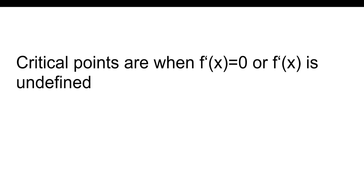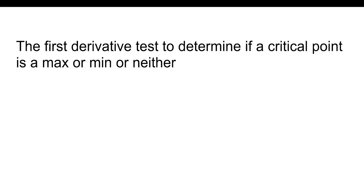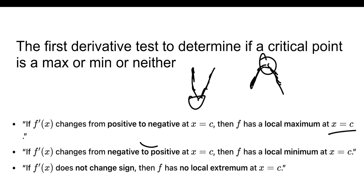Critical points are when f'(x) equals 0 or f'(x) is undefined, and these are candidates for local extrema. The first derivative test determines if a critical point is a maximum, minimum, or neither. If f' changes sign from positive to negative at x = c, then f has a local maximum. If f' changes from negative to positive, there is a local minimum. If f' doesn't change signs at all, f has no local extrema at x = c.